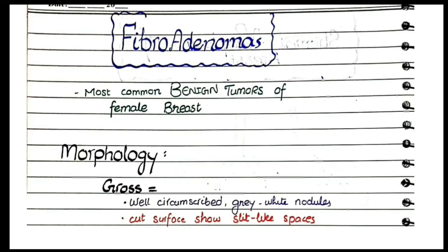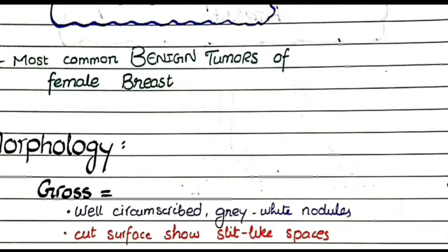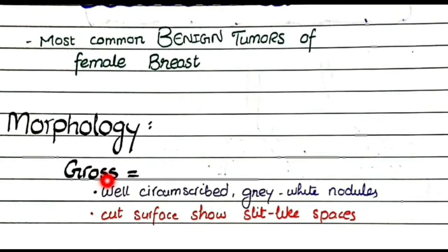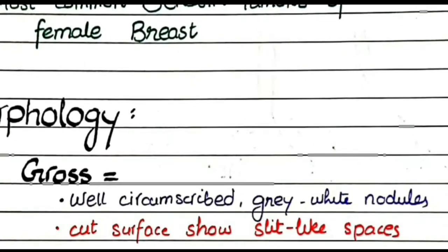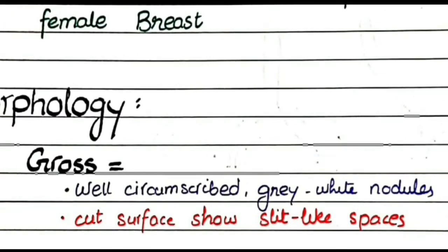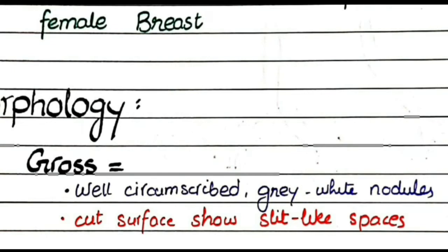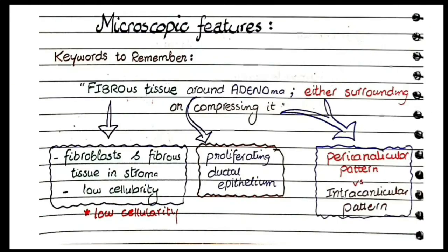Fibroadenomas are the most common benign tumors of the female breast. Morphologically, they appear as well-circumscribed gray-white nodules — well circumscribed because they are benign with well-differentiated boundaries. The cut surface shows slit-like spaces because the growing fibrous tissue compresses the ducts, making them appear slit-like.